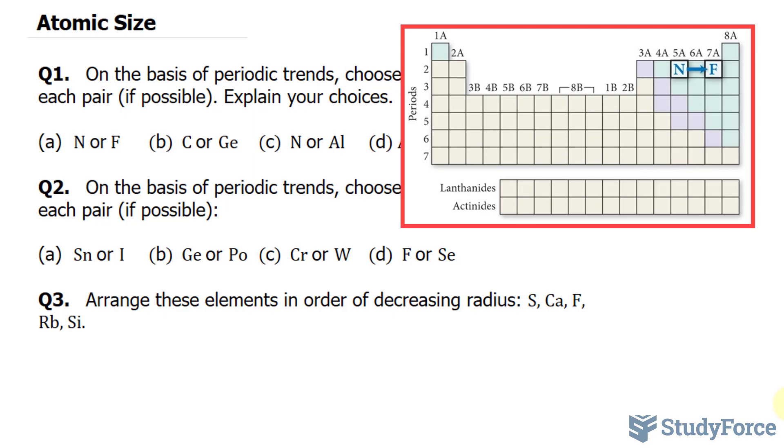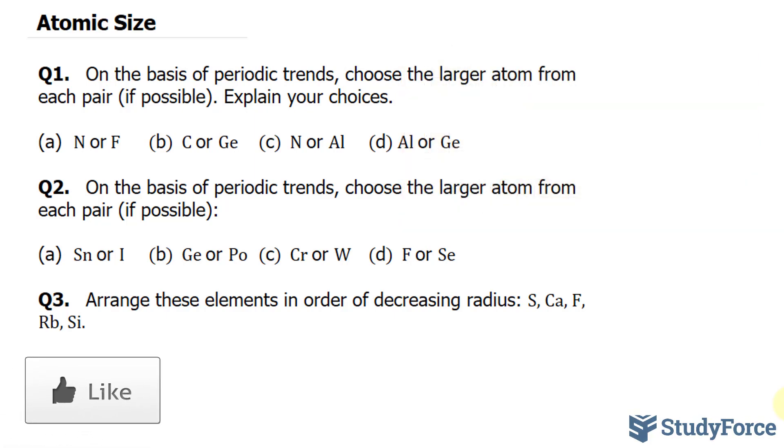So even though fluorine is to the right of nitrogen, its nucleus is larger than nitrogen's, so those outer electrons will be attracted to the core, therefore causing the radius or the overall radius to be smaller. So we can comfortably say that nitrogen is larger.